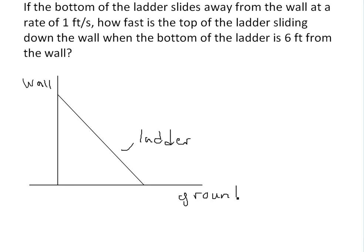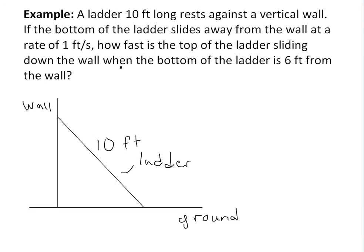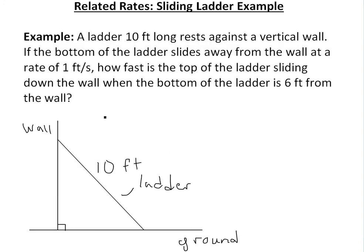So the first thing we should do is just draw it out and write what we know. The ladder is 10 feet long, so the length of it is 10 feet. I'll just write 10 feet here. And this has 90 degrees. Let's just assume that the wall and the ground make a 90 degree angle right there, like most walls do.